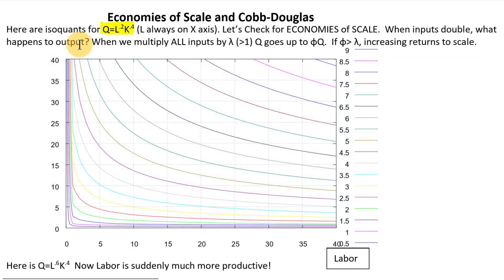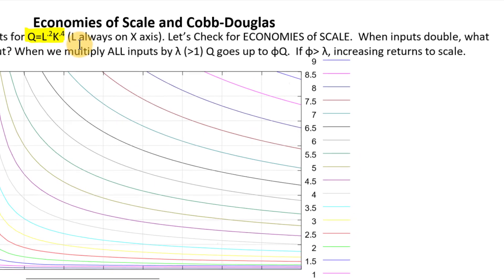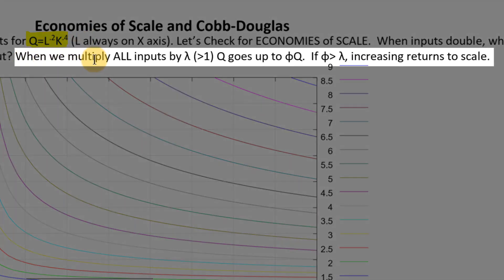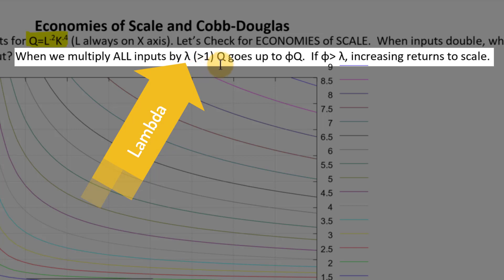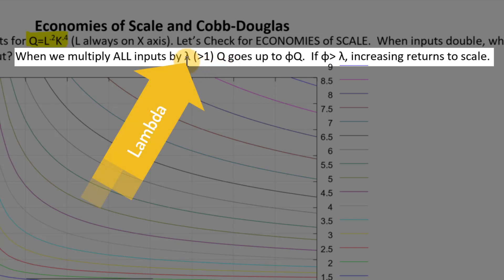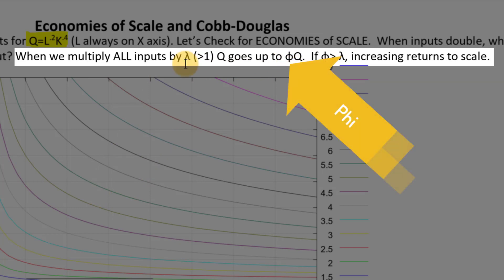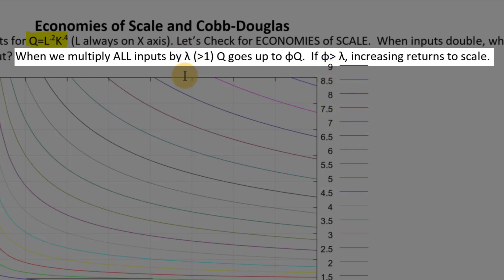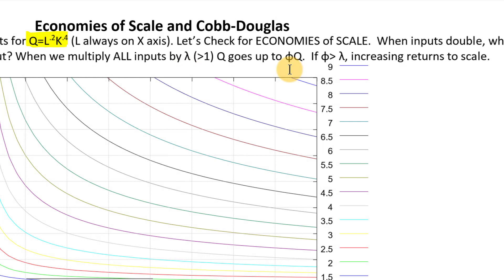The mathematical definition is usually written like this: if we multiply all of our inputs — not just one, but all inputs — by some number lambda, where lambda is greater than 1, we want to see what happens to output q. When we multiply all inputs by lambda, our output goes up by some other multiple, phi. We want to look at the relationship between how much we increase inputs and compare that to how much output increases.